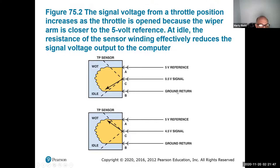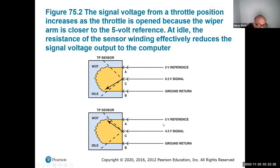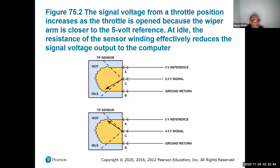Starting at very low — idle position — you'd probably see about 0.5 volts coming back to the computer, and it will set its idle strategy for timing and fuel. As you accelerate, it sweeps up. At full wide open throttle you'd probably see approximately 4.5 volts. Please don't use those as definitive numbers for your diagnosis — definitely pull out the manufacturer's documentation to make sure.